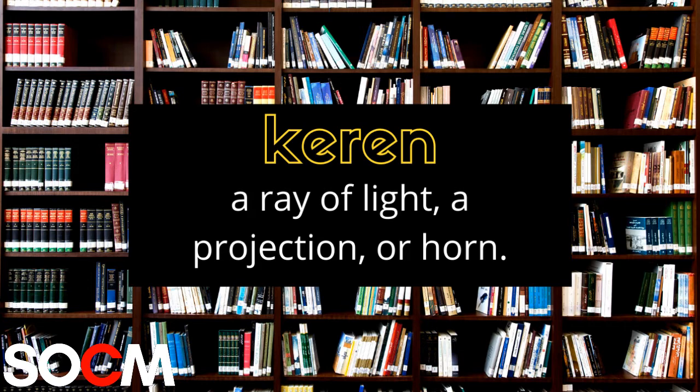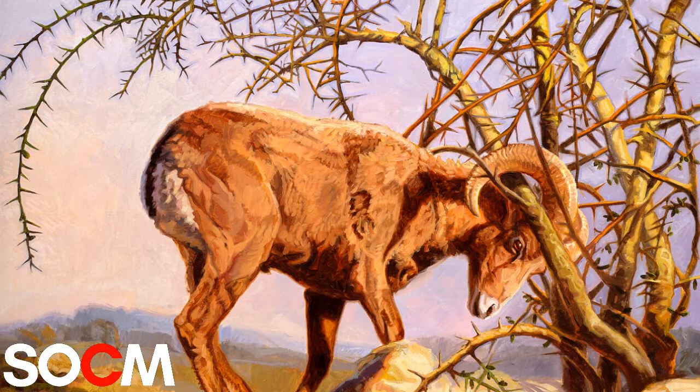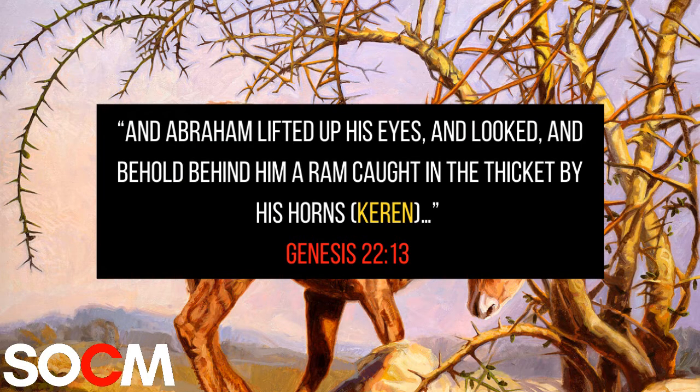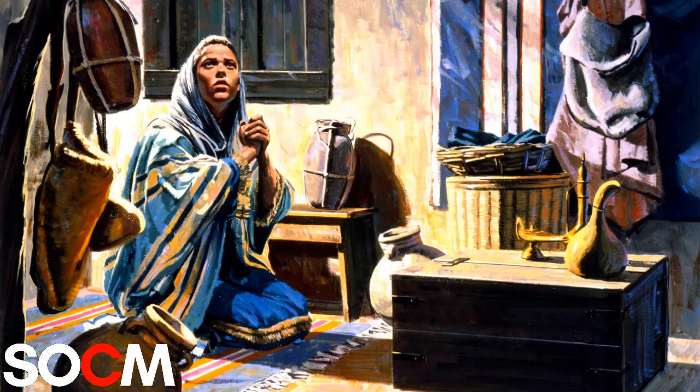When this term is used to describe an animal, it is always speaking of their literal horns. For example, when we read Genesis chapter 22 in verse 13. As with most Hebrew or Greek terms, one word can have a multiplicity of meanings. Even in our English vocabulary, if I say the word 'bat,' there is no way to know if I am speaking of a flying mammal or a wooden stick used to play baseball — you would need more context. This is why it is extremely important to use context to define word meanings instead of using word meanings to define context.